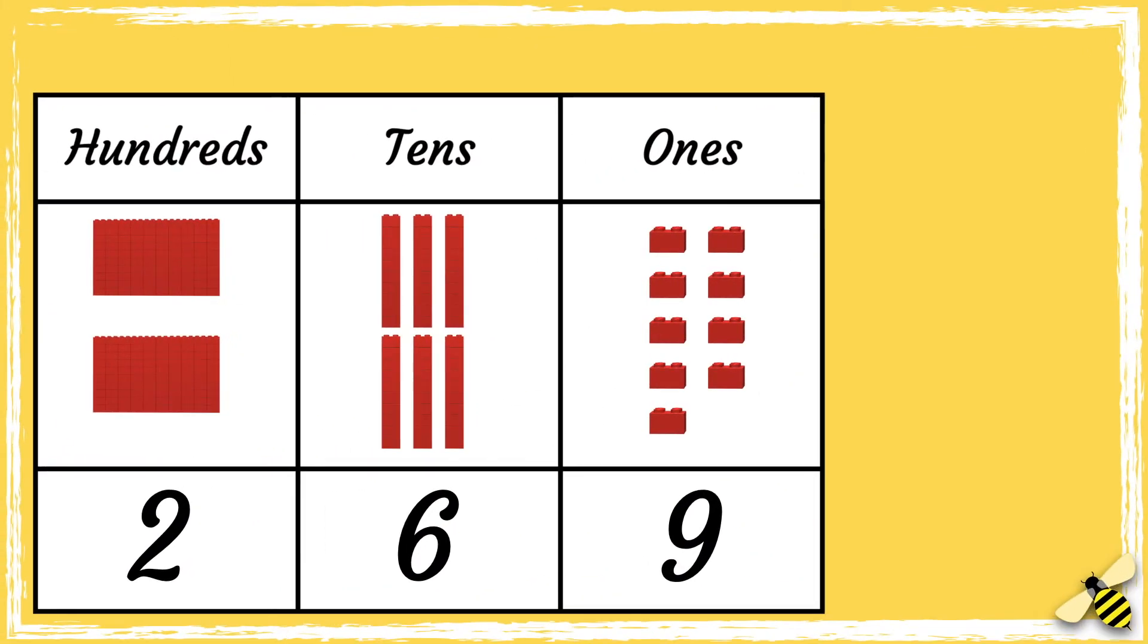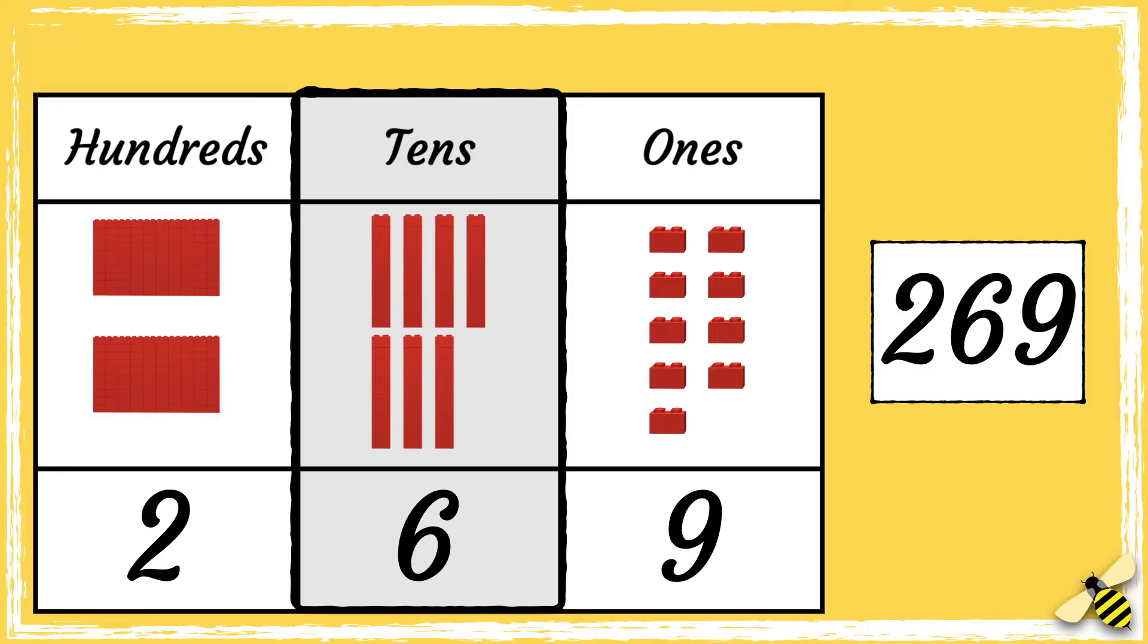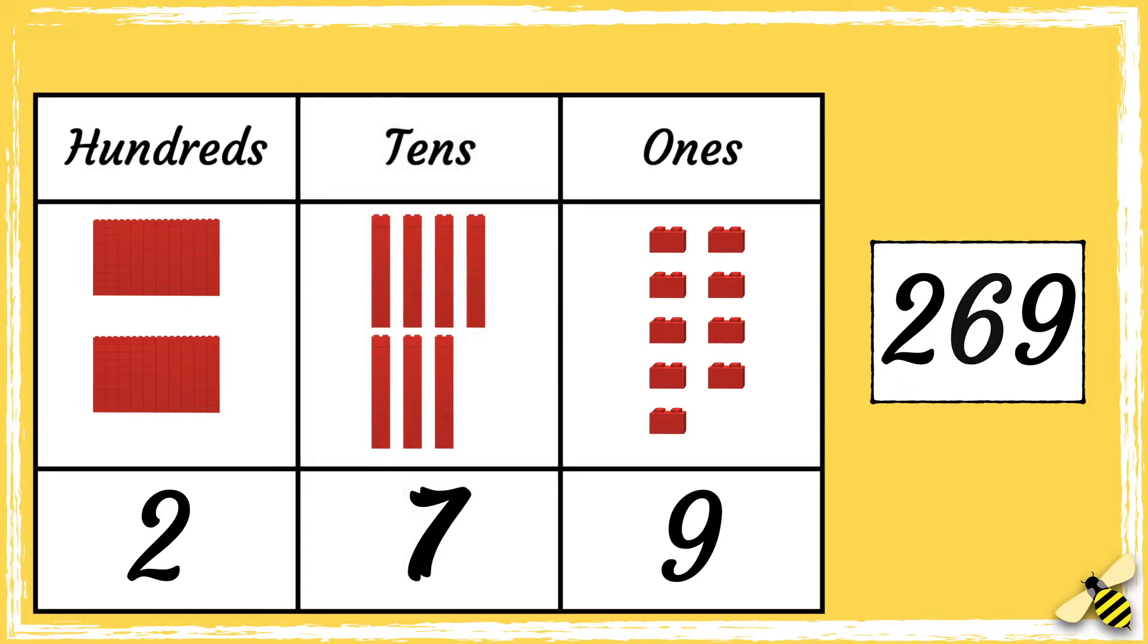Let's have a look at another example. Here is the number 269. When we add 10 more to a number, we need to look at the tens column. So let's add another 10. Six tens becomes seven tens. So the new number is 279.